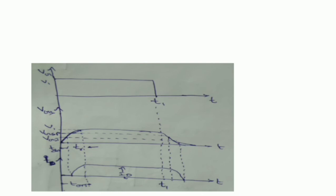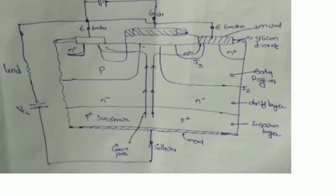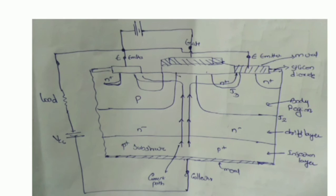Next is IGBT — Insulated Gate Bipolar Transistor. IGBT is also known as: Metal Oxide Insulator Gate Transistor, Conductively Modulated Field Effect Transistor, Gain Modulated Field Effect Transistor, and Insulator Gate Transistor.